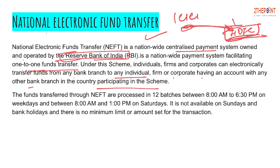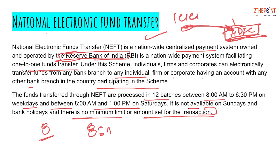NEFT fund transfers are processed in 12 batches between 8 a.m. to 6:30 p.m. on weekdays and between 8 a.m. to 1 p.m. on Saturdays. It is not available on Sundays and bank holidays. There is no minimum limit or amount set for NEFT transactions. The drawback of NEFT is that there is no real-time settlement — transactions are collected and settled in time slots, not on a real-time basis.